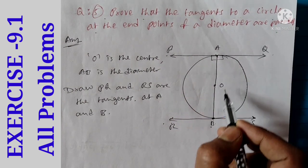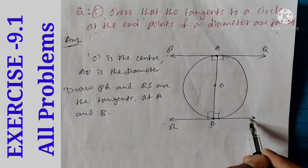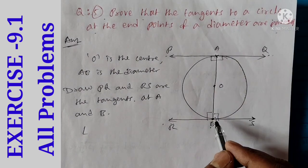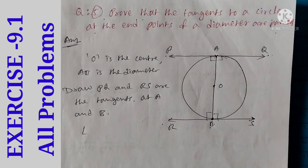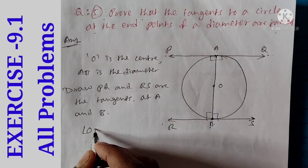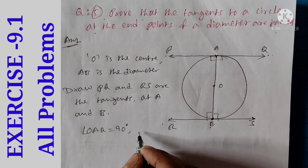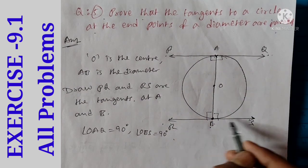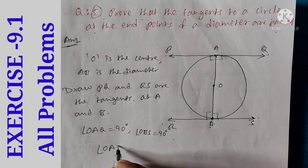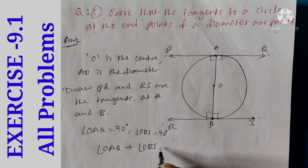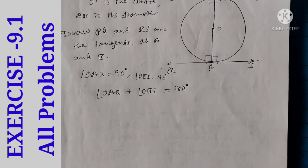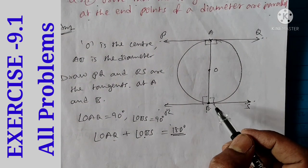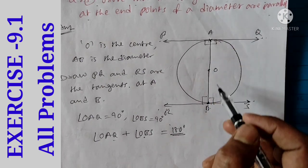This angle is 90 degrees — radius is always perpendicular to the tangent. So angle OAQ is equal to 90 degrees and angle OBS is equal to 90 degrees. Here we get angle OAQ plus angle OBS is equal to 180 degrees. The sum of consecutive interior angles is 180 degrees.